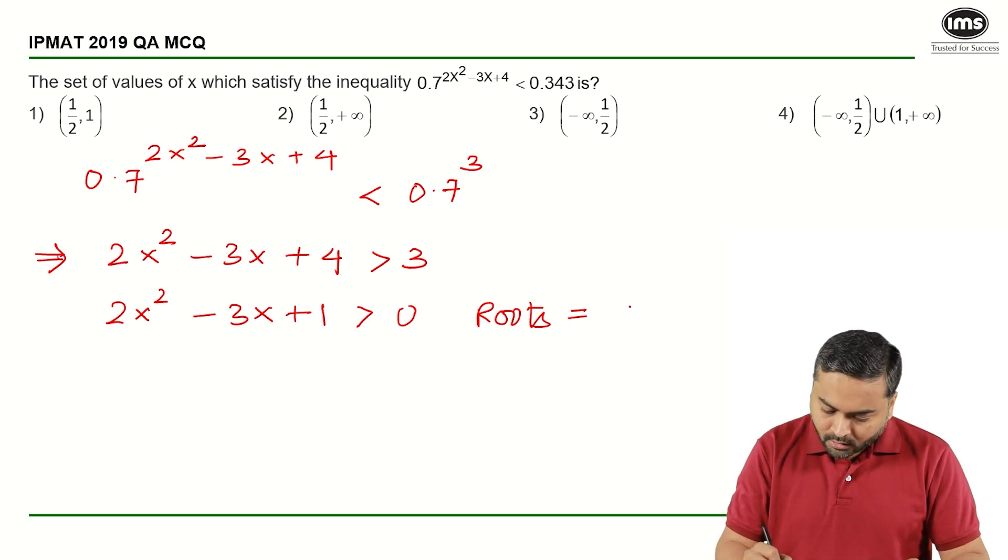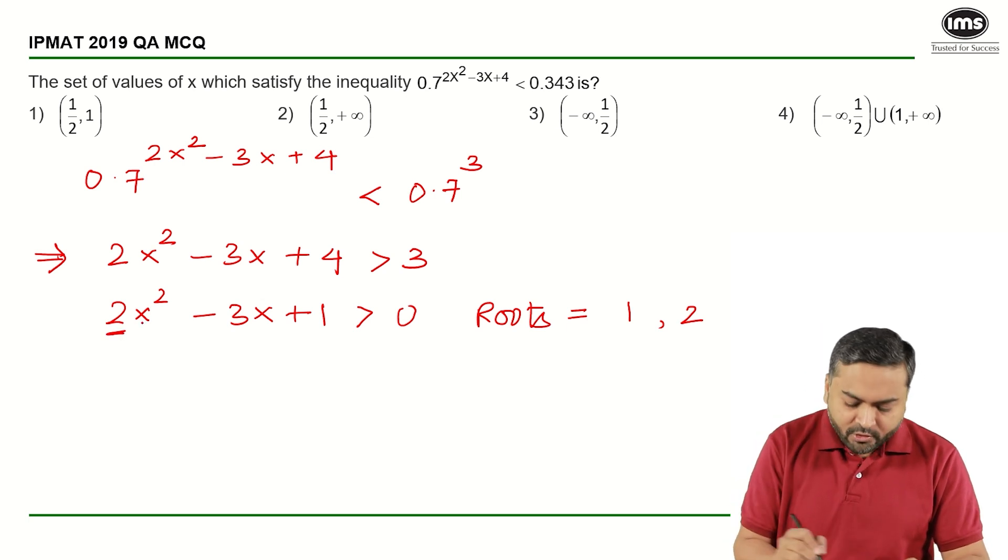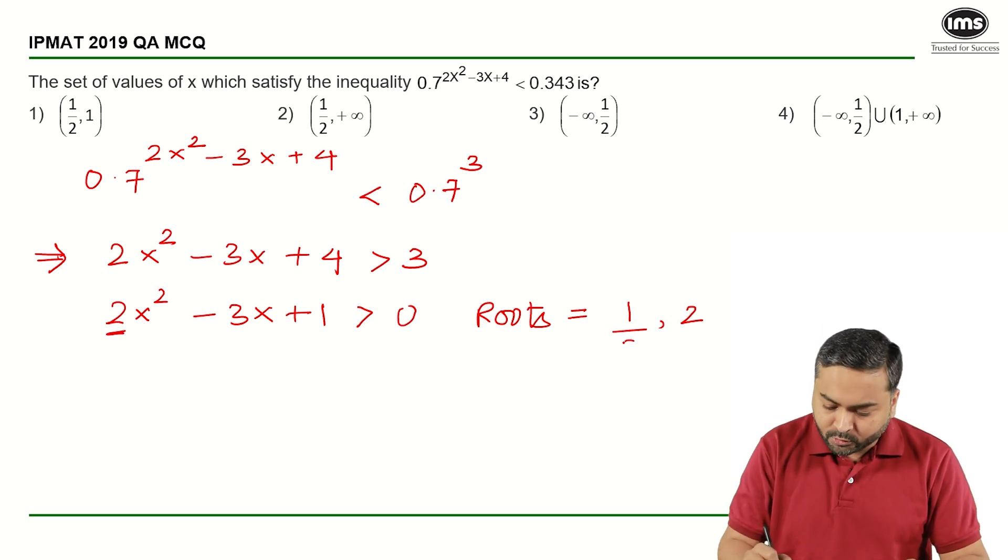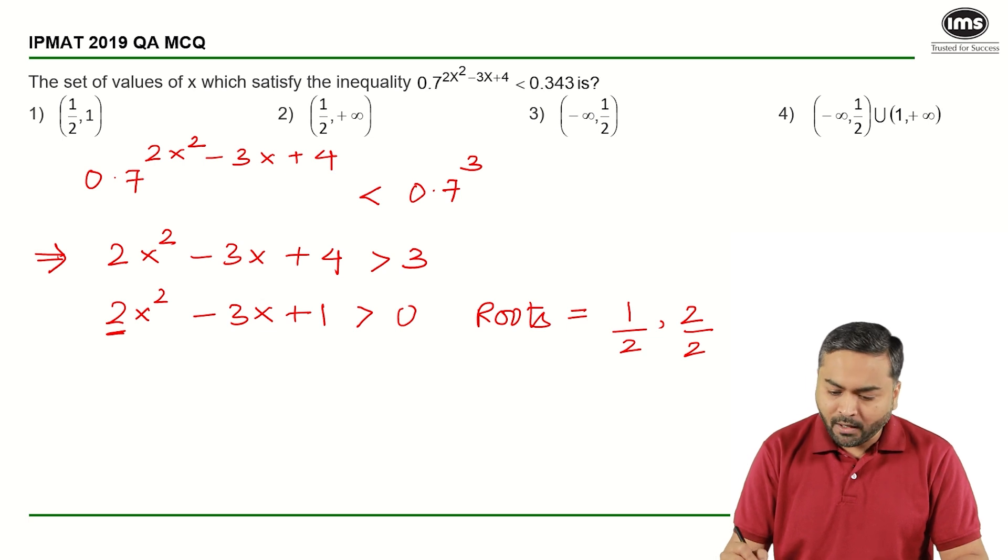So you can say that 1 comma 2, but as we know that the coefficient of x² is 2, I will divide this by 2. So the roots are 1/2 comma 1, the roots are 1/2 comma 1.